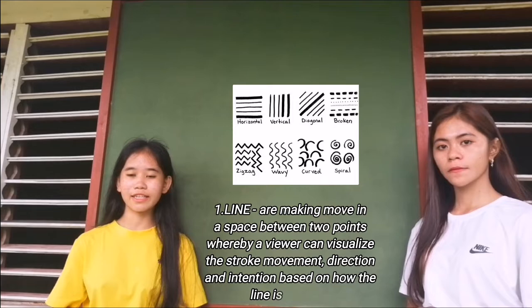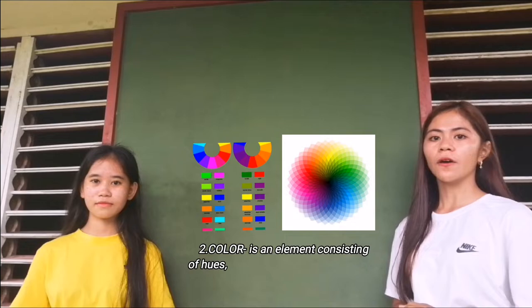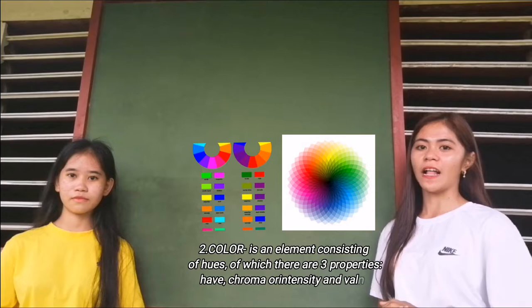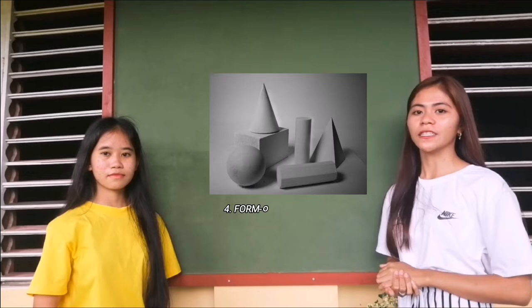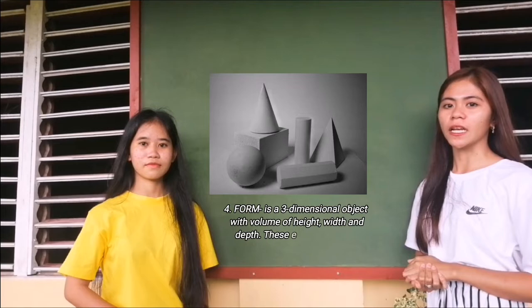Second, color is an element consisting of three properties: hue, chroma and intensity, and value. Third, shape — it is a two-dimensional design encased by a line to signify its height and width structure. Fourth, form is a three-dimensional object with a volume of height, width, and depth.